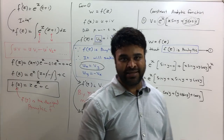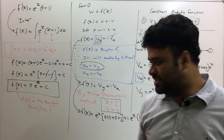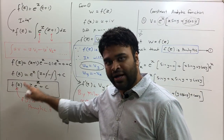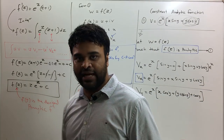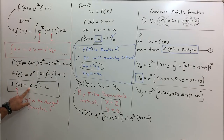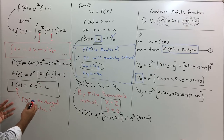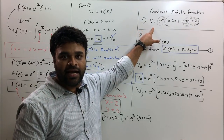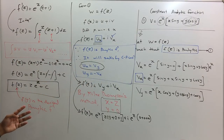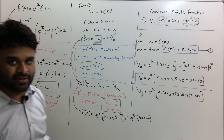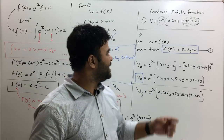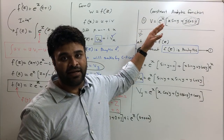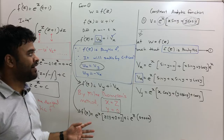The Milne-Thomson technique is as simple as that — put x as z and y as zero. The resulting f(z) is guaranteed to be an analytic function. You can verify this by replacing z with (x + iy) in f(z), writing it as u + iV, expanding, and confirming you recover the original V. You can also check that f(z) satisfies the Cauchy-Riemann conditions.